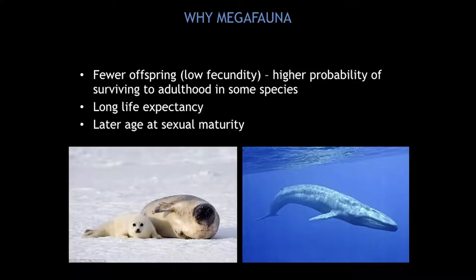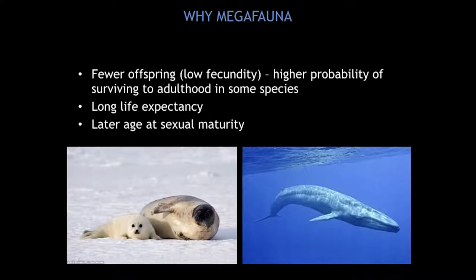Why am I focusing on megafauna? Obviously there are lots of other species affected by ghost gear, particularly fish and crustaceans. Well, megafauna employ a K-selected life strategy, which basically means — when compared to fish or crustaceans that have an r-selected strategy — they have fewer offspring, low fecundity. Generally speaking, their offspring do survive to an older age because there is some sort of parental guidance or care.